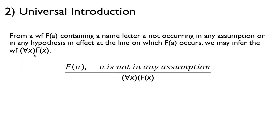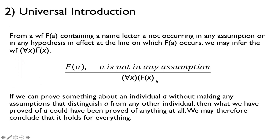Here's the second rule: universal introduction. This one says that if we have f of a, and a is not part of any assumption — so that a is essentially arbitrary — then we can conclude that for all x, f of x. This is essentially saying that if we can prove something about an individual a without making any assumptions that distinguish a from any other individual in the domain, then what we've proven of a could be proven of anything at all.